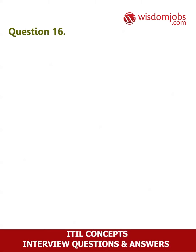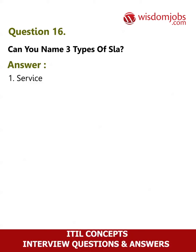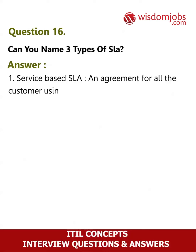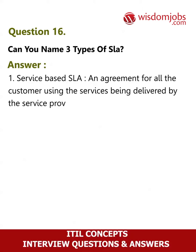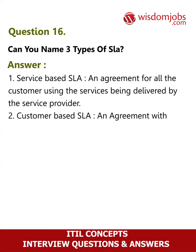Question 16: Can you name three types of SLA? Answer: One, service-based SLA — an agreement for all the customers using the services being delivered by the service provider. Two, customer-based SLA — an agreement with an individual customer group covering all the services they use.